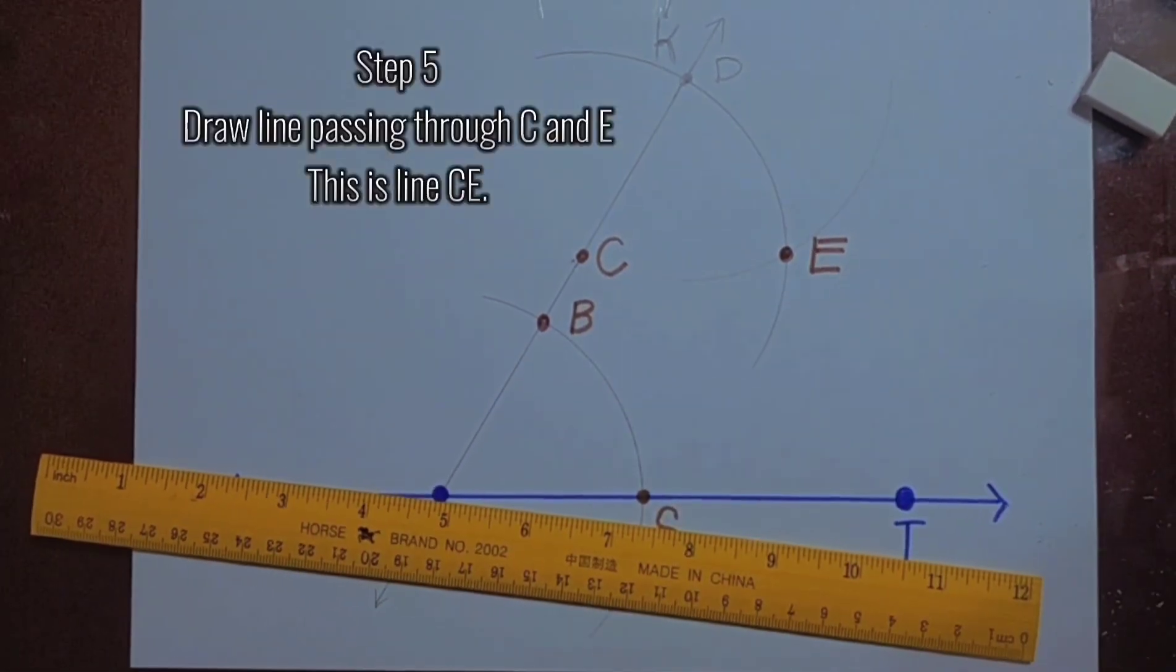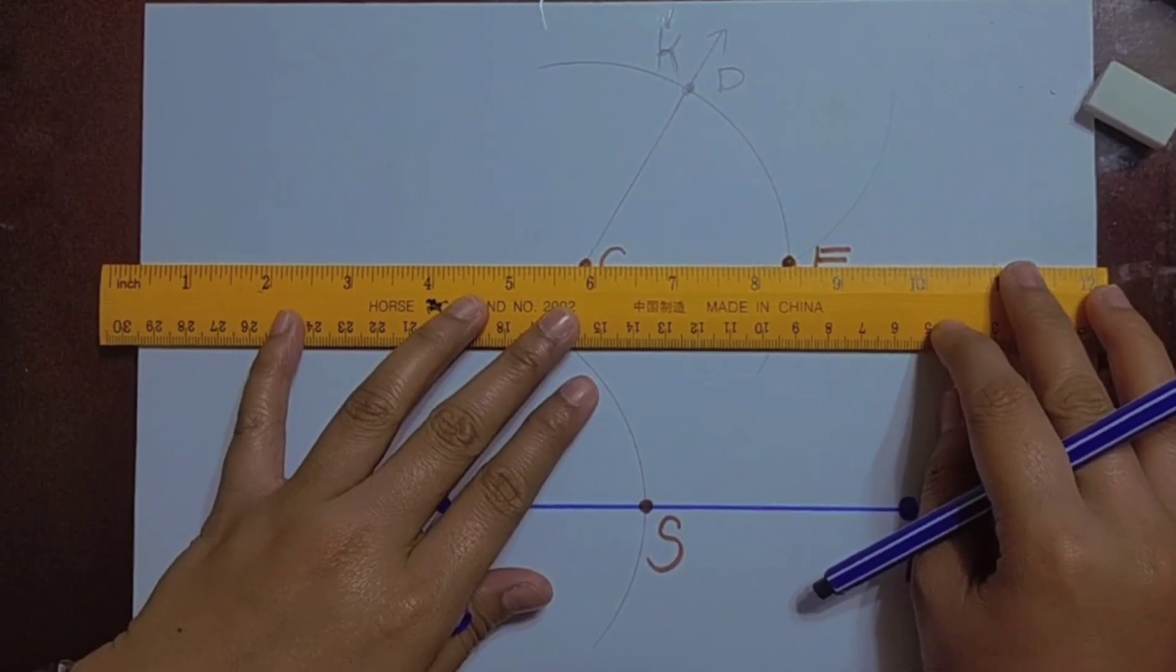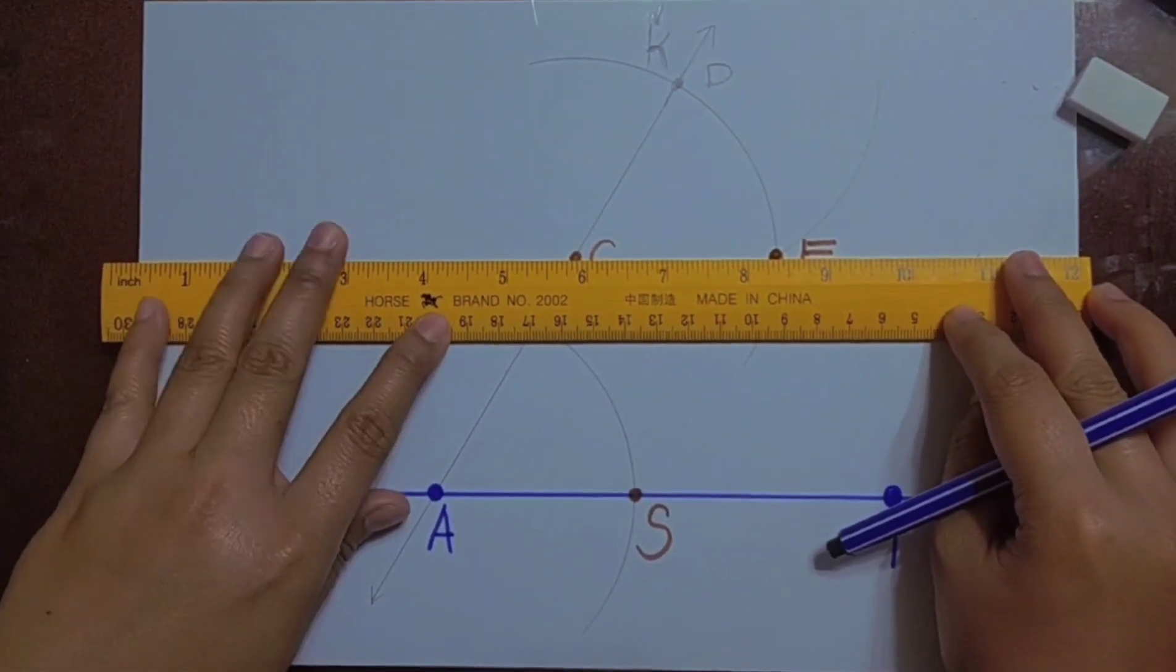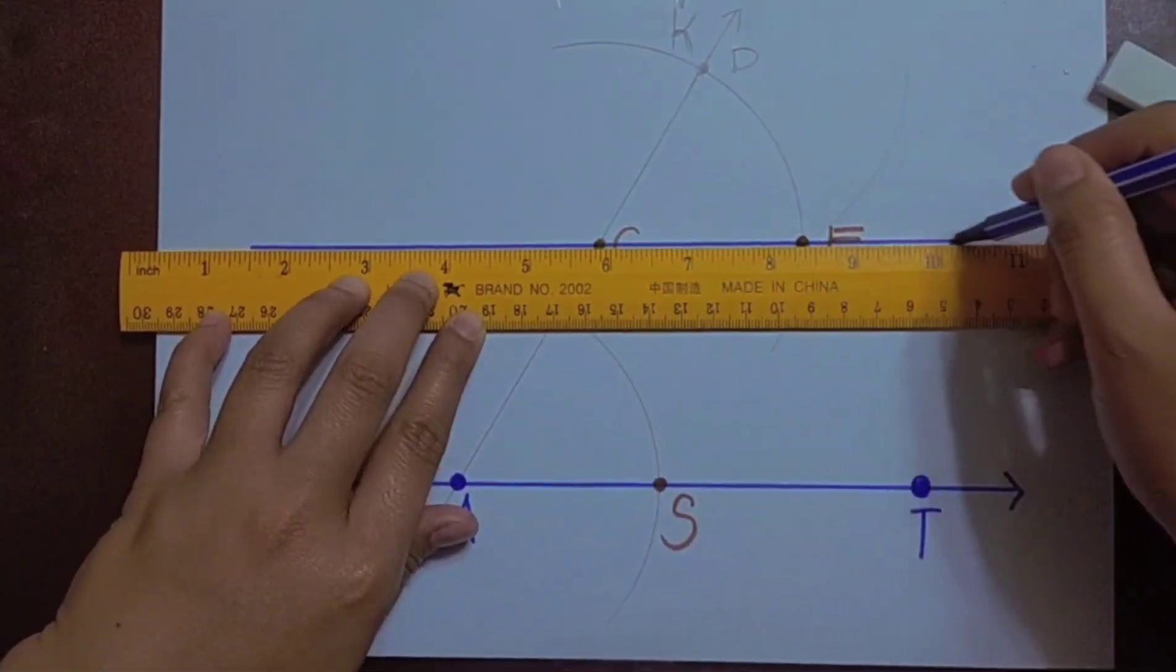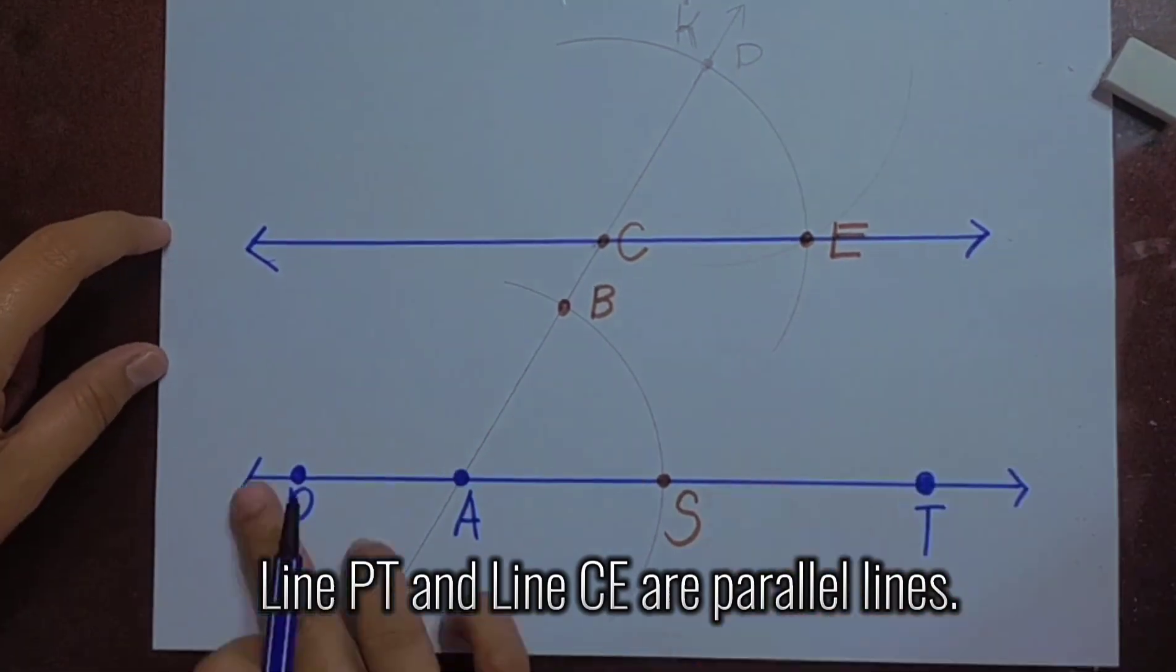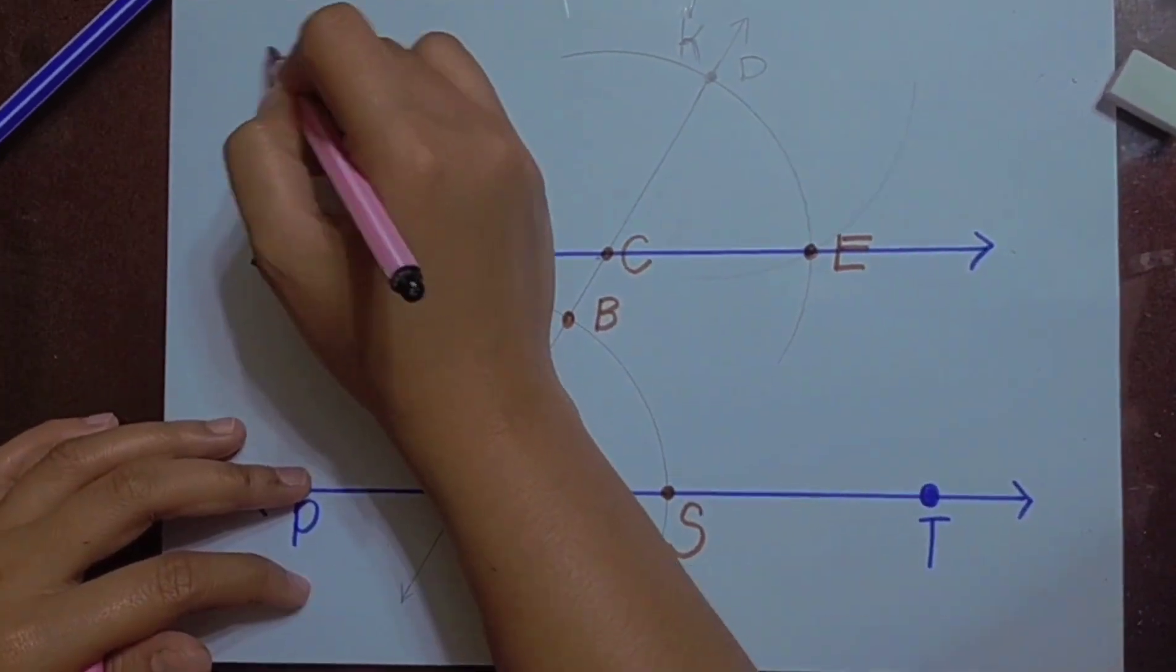Step 5: Draw line passing through C and E. This is line CE. Line Pt and line CE are parallel lines.